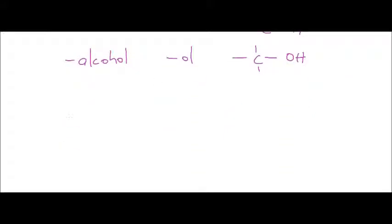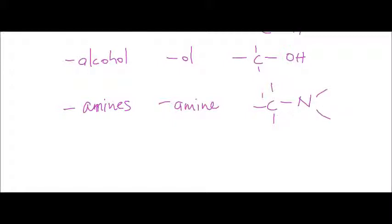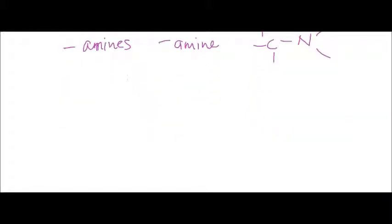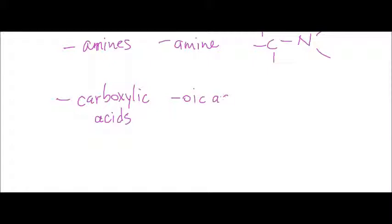Another very important group, especially in biology, are your amines. Your amine groups also end in 'amine,' and we've got a carbon single bonded to a nitrogen — really important functional group with regards to amino acids in biology. Another functional group also relevant to biology when dealing with amino acids are the carboxylic acids. Their names end in '-oic acid,' and they have a carbon double bonded to an oxygen but single bonded to an O-H group.